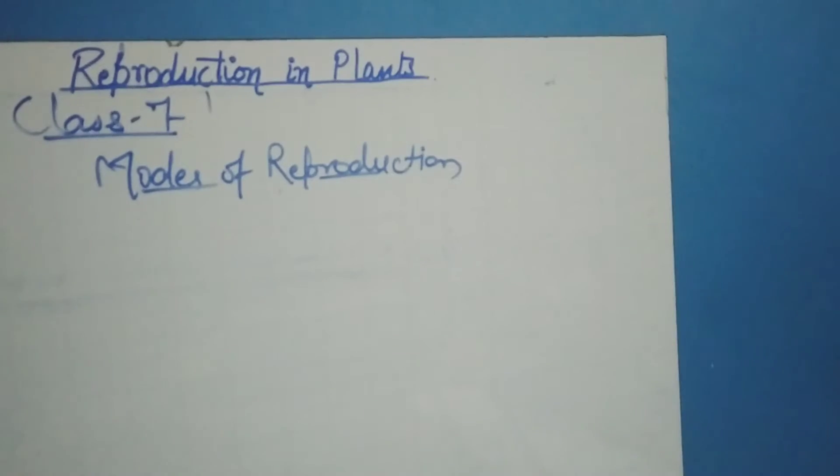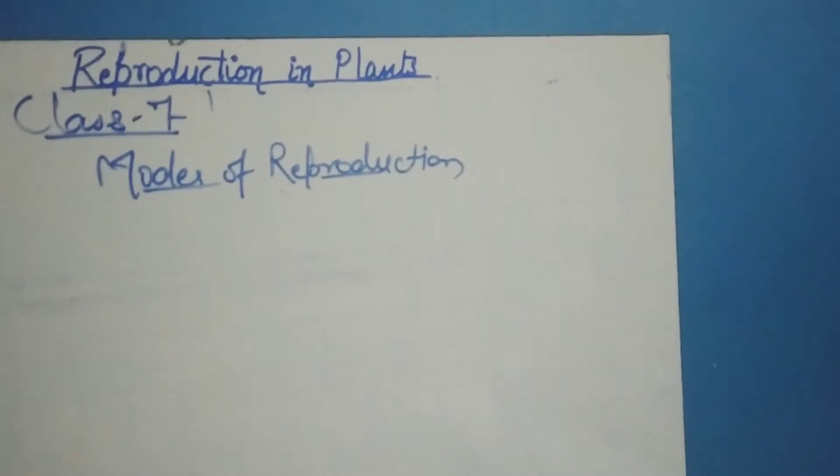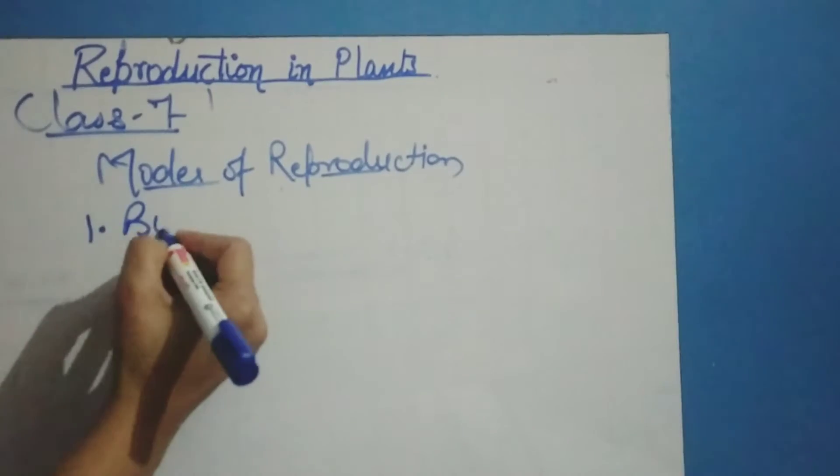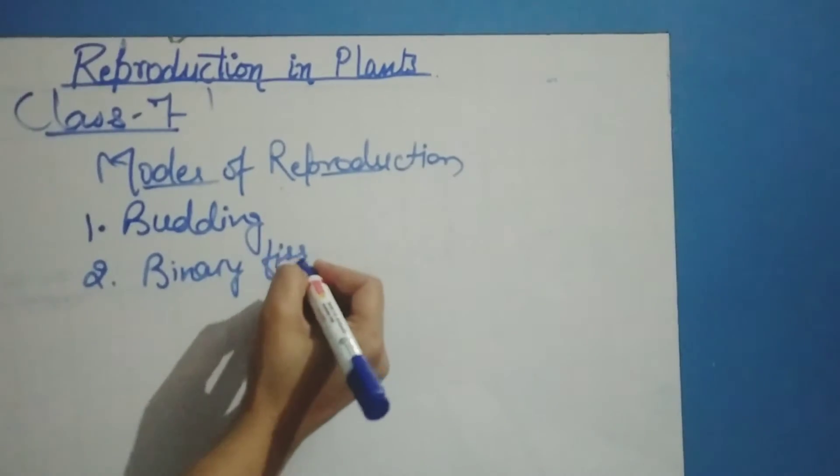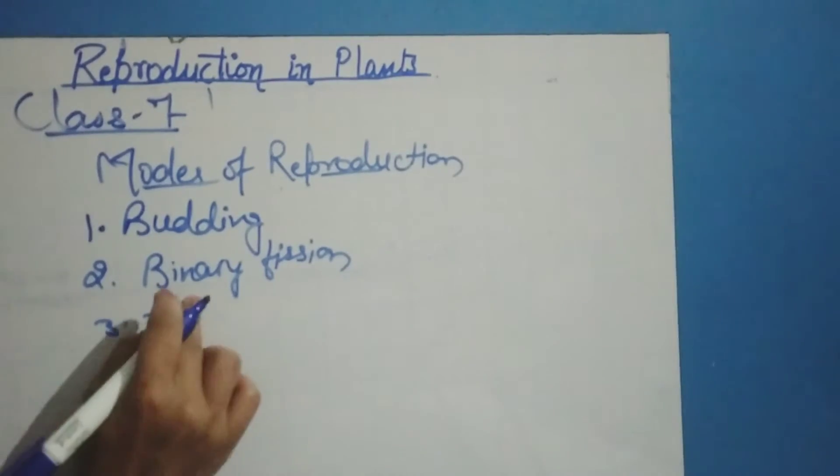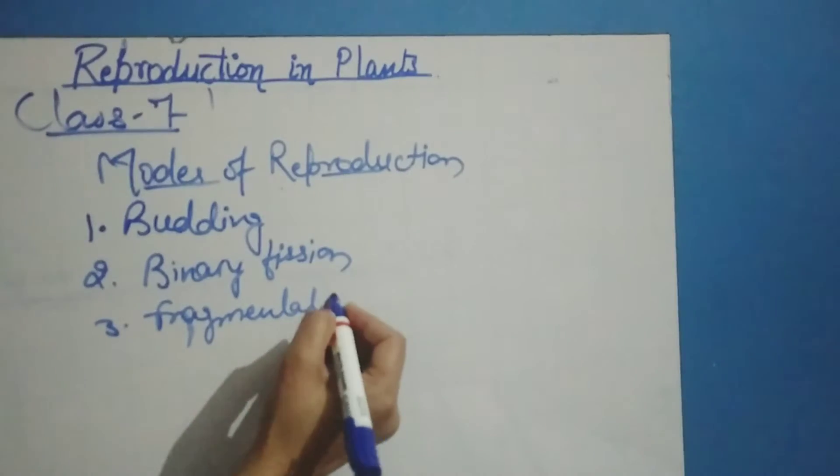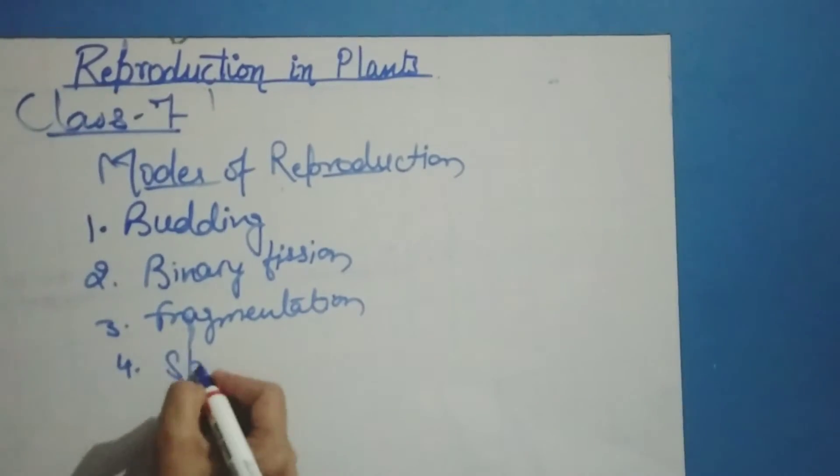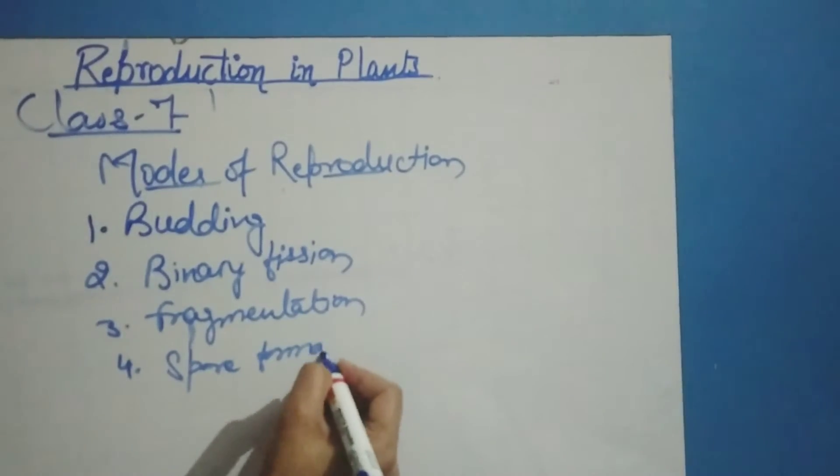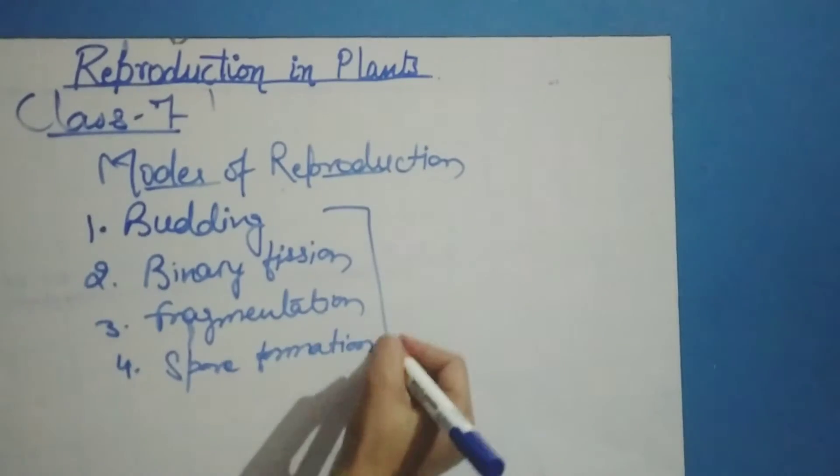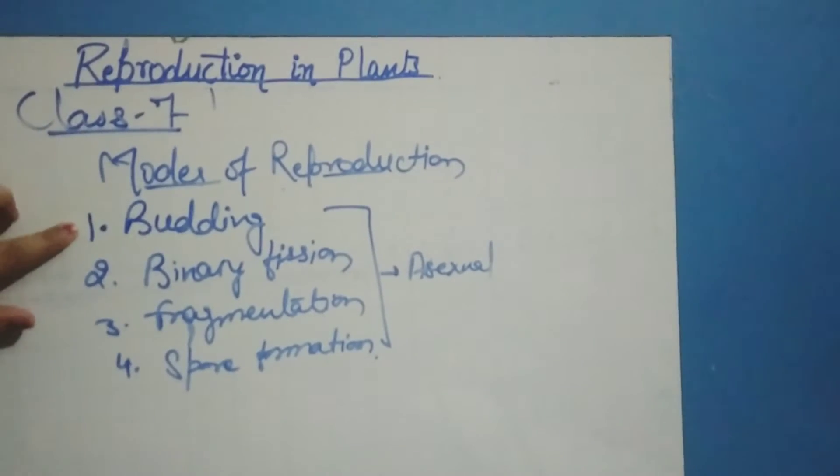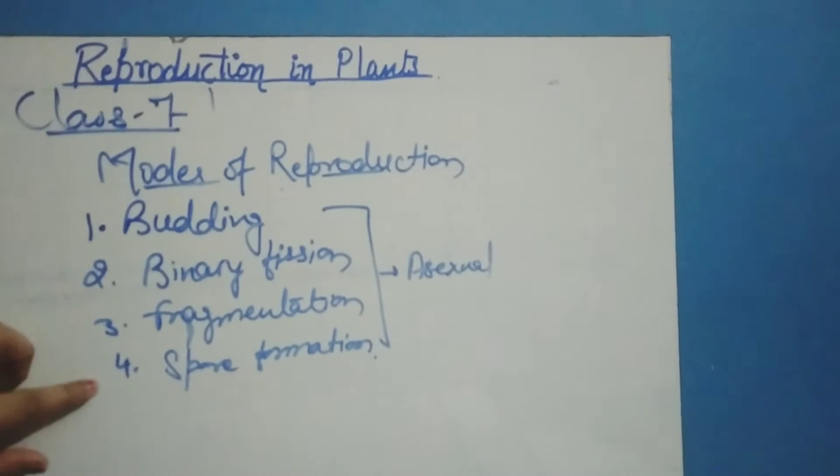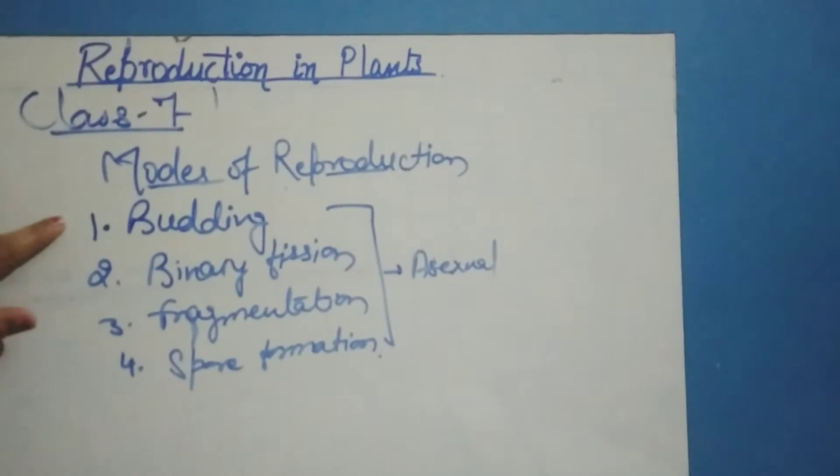Now let's see asexual reproduction first. Asexual reproduction doesn't require two parents and doesn't need gamete formation. Asexual reproduction happens by budding, binary fission, fragmentation, and spore formation. These are four types of asexual reproduction.